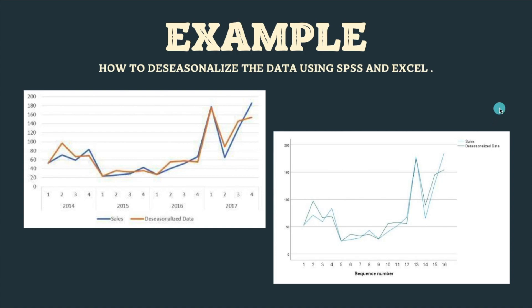As you can see here, there is a chart showing both the original sales and the de-seasonalized data. The two lines in the chart show a similar overall trend, but the seasonal pattern has been removed from the de-seasonalized data line, as you can see. With this de-seasonalized time series data we can now predict or forecast future data.